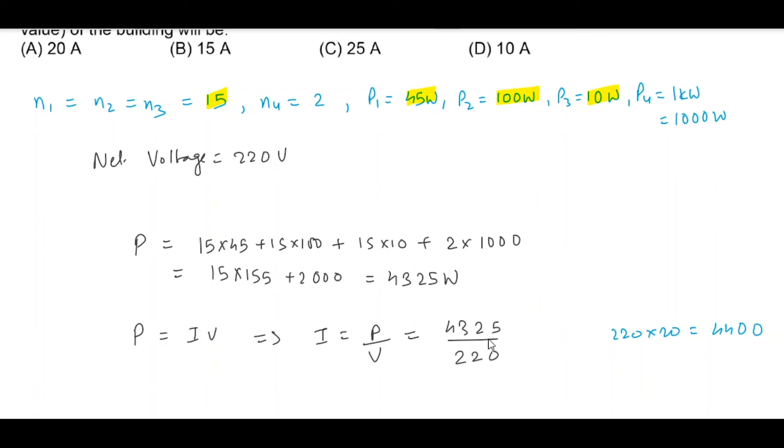220 times 15 would be smaller than this. It will be somewhere like 19.67 or something like that. So we can say it is very close to 20, and that should be 20 ampere, which will be the answer.